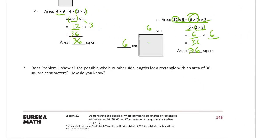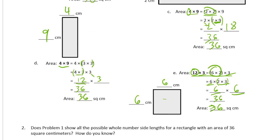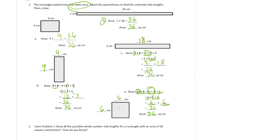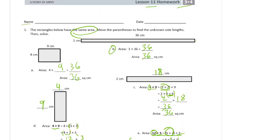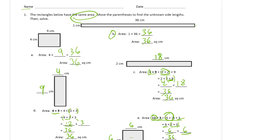Does problem 1 show all the possible whole number side lengths for a rectangle with an area of 36 square centimeters? How do you know? Looking at it — how many factor pairs does 36 have? We've got 1 and 36, 2 and 18, 4 and 9, and 6 and 6. Are there any other factor pairs for 36?